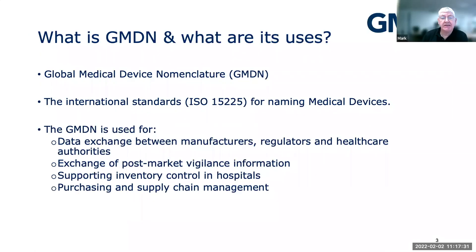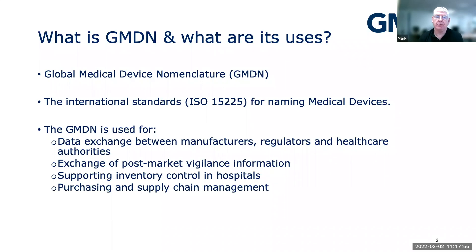GMDN is a naming system — the Global Medical Device Nomenclature. Nomenclature means naming system. It's based on an international standard and is used to give standardized names to medical devices. We know that devices are often given special names by manufacturers, or different clinical users refer to them in their own local language. So we're trying to standardize names so that someone who manufactures a device in one country can understand and identify that same device in another country where their customer is based.